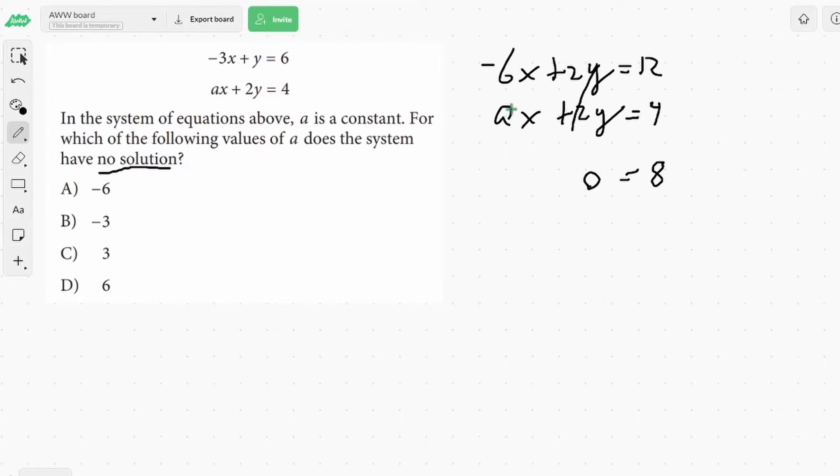And negative 6 and a. So we want a to cancel. So this would be negative 6 as well, because negative 6 minus negative 6 would be 0. So for a, a would equal negative 6, and that would be our answer.